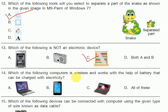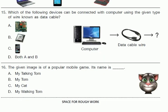Question 13: Which of the following is not an electronic device? Question 14: Which of the following computers is wireless and works with the help of a battery that can be charged with electricity? All of this. Question 15: Which of the following devices can be connected to the computer using the given type of cable known as a data cable? The data cable connection makes C the right answer — the mobile.